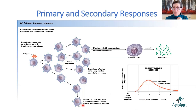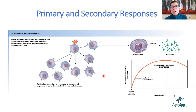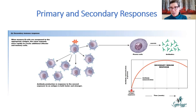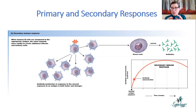After the primary response, memory cells are generated and remain at the point of entry. On second antigen exposure — the secondary response — within hours, those memory cells are activated, producing a very high titer (high concentration) of antibodies that rapidly bind and immobilize the foreign substance. You might not even know you were exposed — you don't get sick. This is the secondary immune response: the adaptive immune system remembers and responds rapidly.